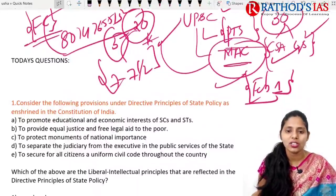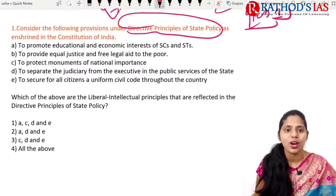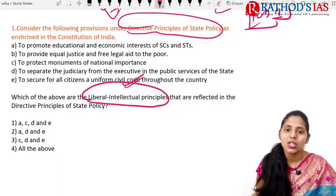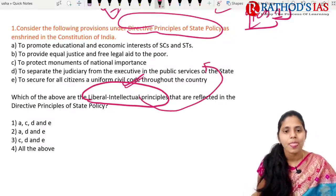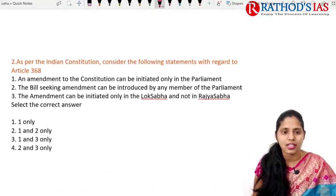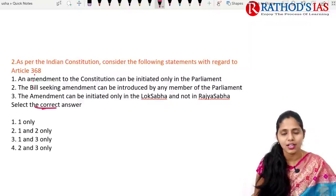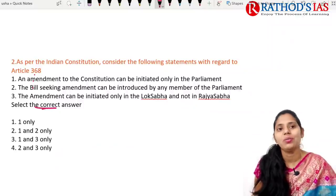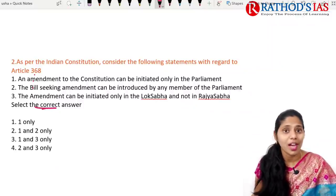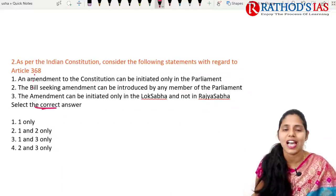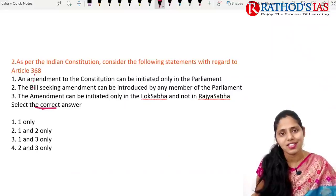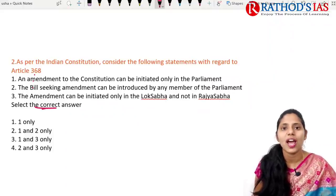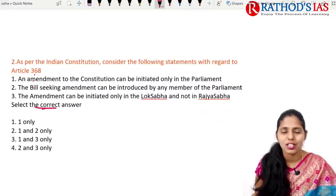Today's questions: the first is regarding DPSP — Directive Principles of State Policy — asking you to identify which are the liberal-intellectual principles among Gandhian, socialistic, and liberal categories. The second question is regarding Article 368 — read the statements and find the correct answer. Share your answers in the comment box — it helps motivate practice and elimination techniques. There is no negative marking here. Thank you for watching — please subscribe, like, share, and enroll in the courses.